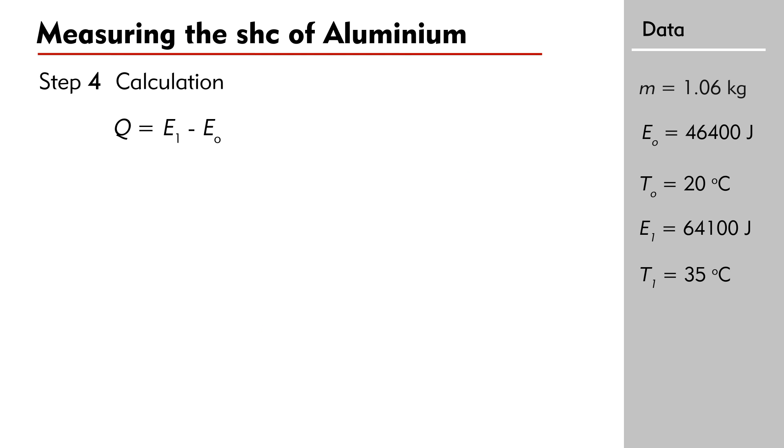The energy supplied is E₁ - E₀, that is 64,100 minus 46,400 equals 17,700 joules. The change in temperature is ΔT = 35 - 20 = 15°C.